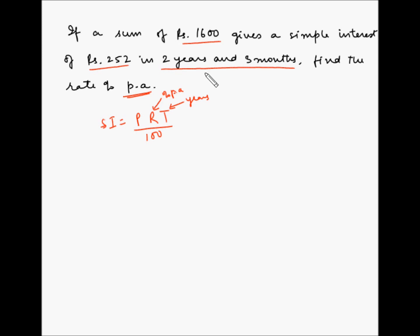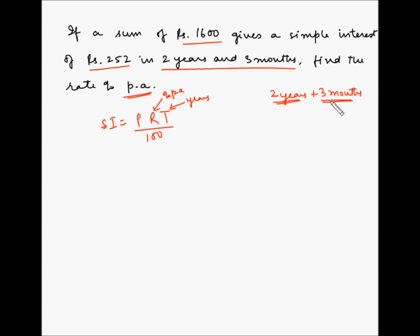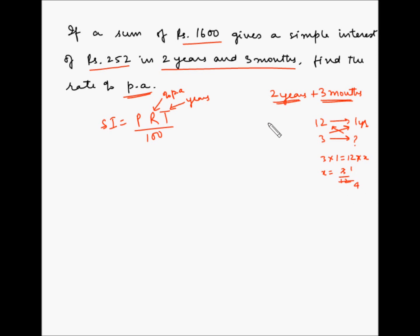We have to convert this into years. Two years and three months means two years plus three months. The three months part is in months, so we convert it to years. We know that 12 months = 1 year, so by cross multiplication: 3 × 1 = 12 × x, giving x = 3/12, which simplifies to 1/4.